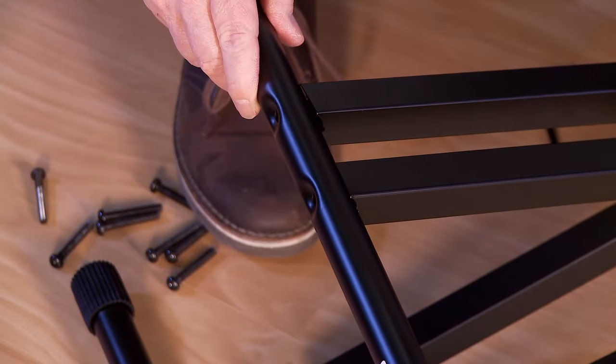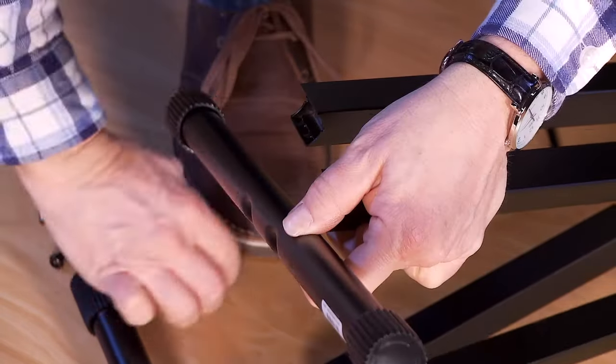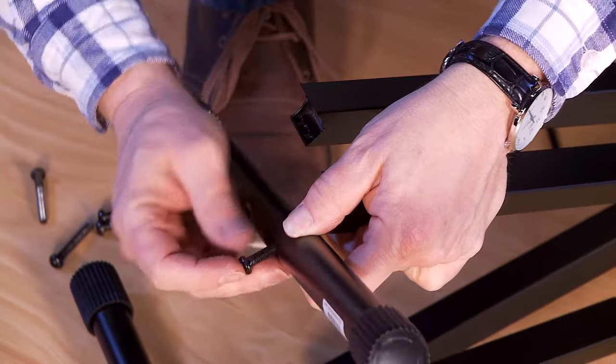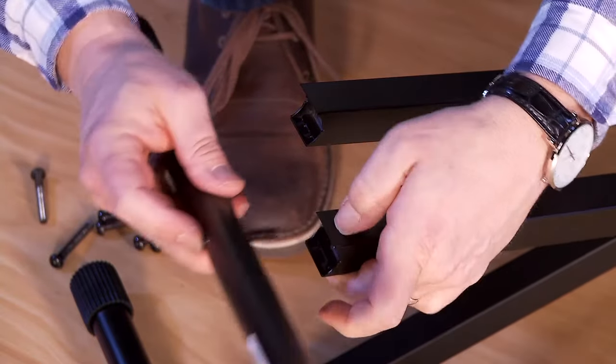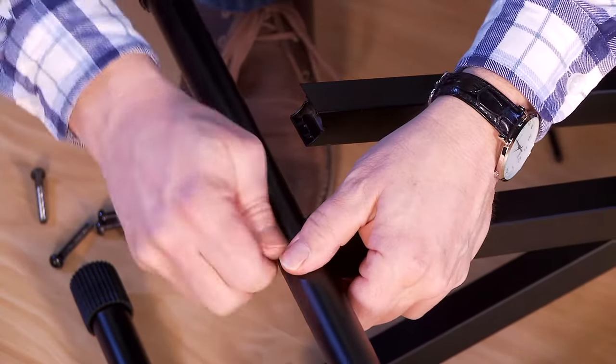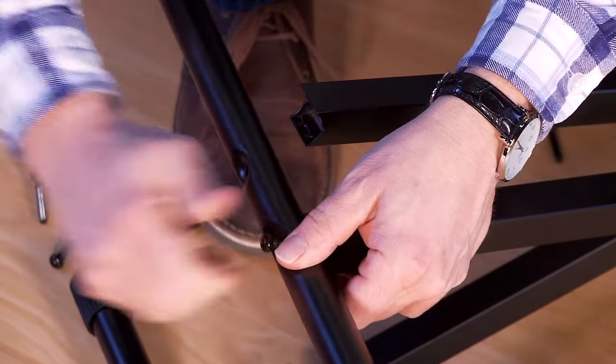There are two leg pieces, one with a wide hole placement and one with narrow hole placement. Secure them to the end of the frame using the bolts you removed in the previous step.